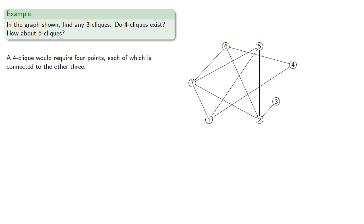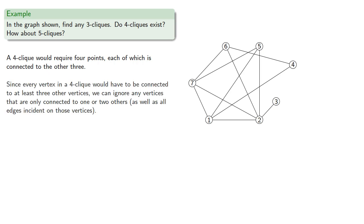A 4-clique would require 4 points, each of which is connected to the other 3. Since every vertex in a 4-clique would have to be connected to at least 3 other vertices, we can ignore any vertices that are only connected to 1 or 2 others, as well as any edges incident on those vertices. We can then try to find a 4-clique among the remaining subgraph.